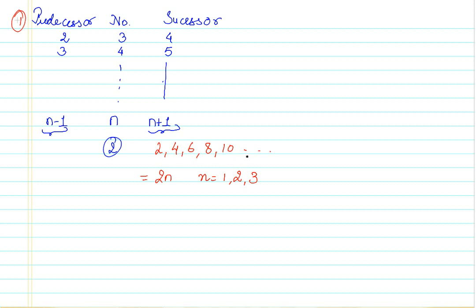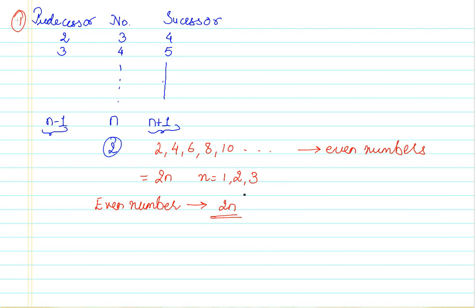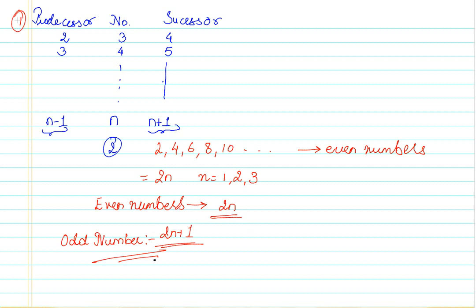If you see this number more closely, I have written a pattern for the even numbers. So for even numbers, the algebraic expression is 2n, so I can put any value of n and find out what is the even number. Now there will be a question: what would be the pattern for odd numbers? For odd numbers, the pattern would be 2n plus 1, because 2n is an even number, so if I add 1 to it, I will always get an odd number.